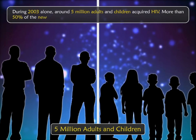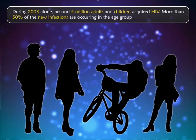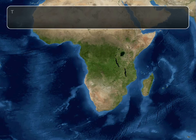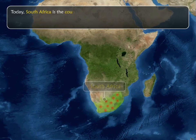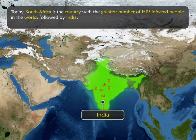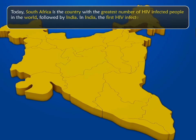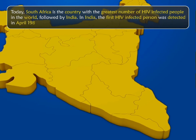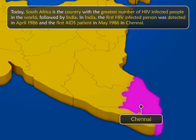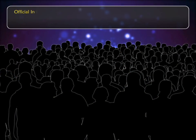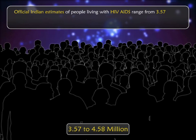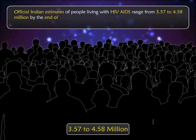More than 50% of the new infections are occurring in the age group of 15 to 24 years. Today, South Africa is the country with the greatest number of HIV infected people in the world, followed by India. In India, the first HIV infected person was detected in April 1986 and the first AIDS patient in May 1986 in Chennai.